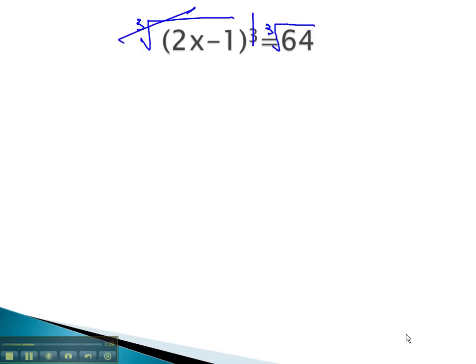Third power and third root are inverses, and we're left with 2x minus 1 equals the third root of 64, which is 4.